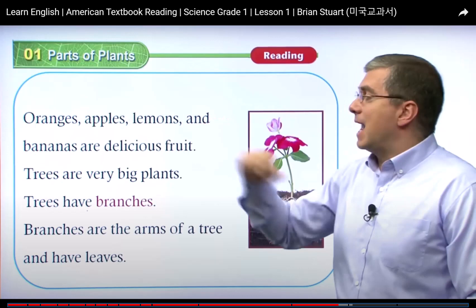Oranges, apples, lemons, and bananas are delicious food. Trees are very big plants. Trees have branches. Branches are the arms of the tree and have leaves. The tree has many branches — if we are planted as a tree, we will see that our two arms are two branches.